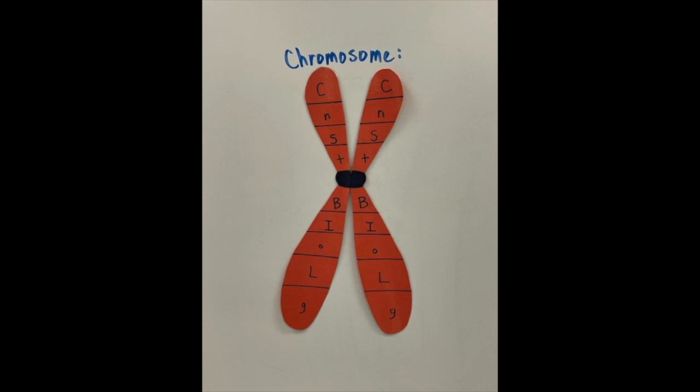Probably most people, when they think of a chromosome, they think of this typical X shape, which is not wrong. That is a chromosome. And we're going to talk about the different parts of that first before I then explain why the X, it's really only a sliver of time that the chromosome even looks like that, and that's right before the cell is dividing.